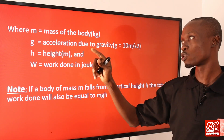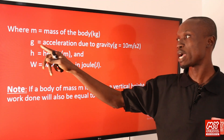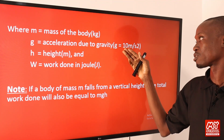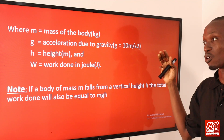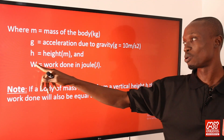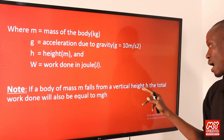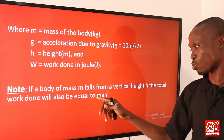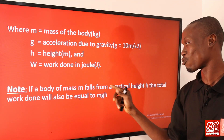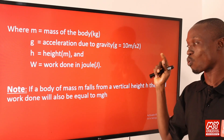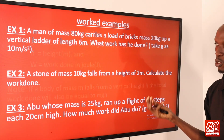In the formula W = mgh: m is the mass of the body in kilograms, g is the acceleration due to gravity (typically 10 m/s² or 9.8 m/s²), h is the vertical height in meters, and W is the work done in joules. Note also that if a body of mass m falls from a vertical height h, the total work done is equally given by W = mgh.